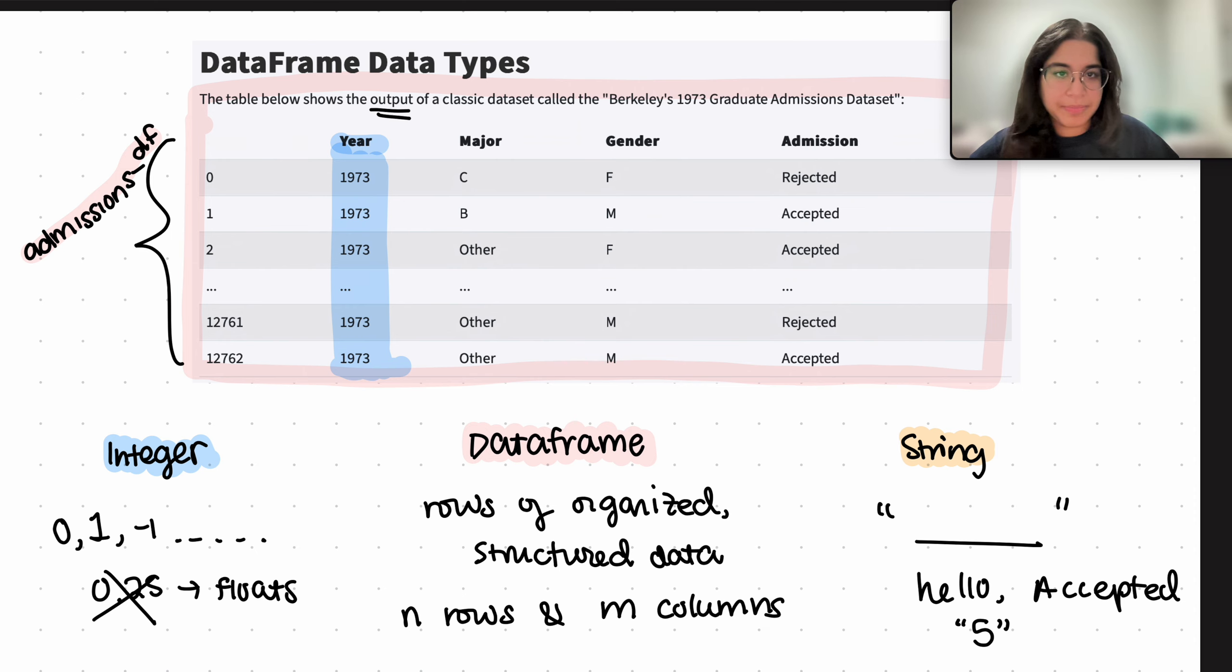And finally, we have strings. As we mentioned, those are like words, basically. All of the major column, we have the gender, and the admissions over here. Basically, all of these three columns are strings because these are all words that are included in our data frame.